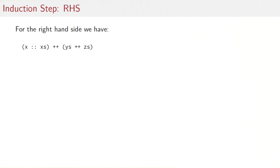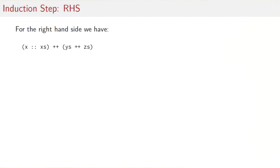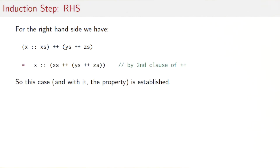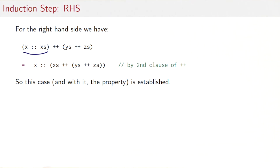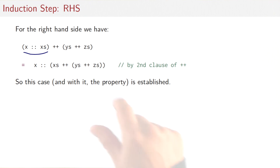Now turning to the right-hand side, we have X :: Xs followed by (Ys ++ Zs). We invoke the second clause of ++ to pull out X from the first list, giving X :: (Xs ++ (Ys ++ Zs)). That is exactly the same as what we simplified the left-hand side to. So the case, and with it the property, is established.